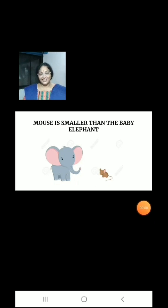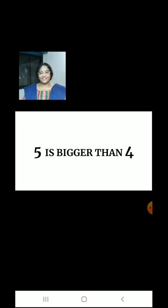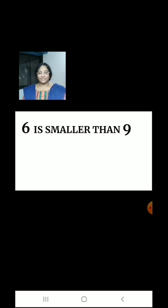Children, just like animals or objects, numbers are also smaller or bigger. Number 2 is smaller than number 3. Number 5 is bigger than number 4. Number 6 is smaller than number 9.